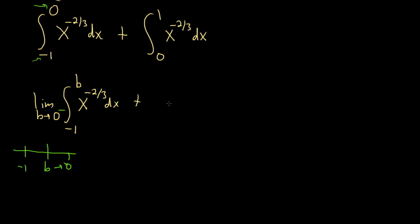So plus limit as b approaches 0, and this is b to 1, x to the negative 2 thirds dx. Same thing here, we need a little picture to figure out the direction. So here's 0 and here's 1. I'm getting these from the upper integral here. And here's b. So it's approaching from the right.